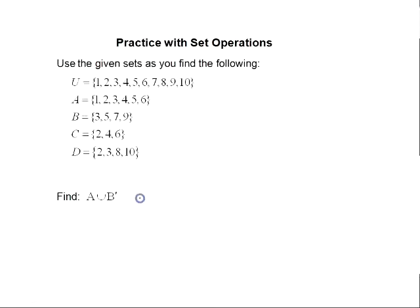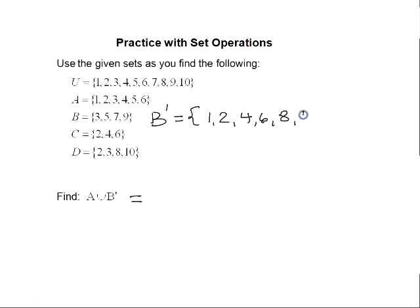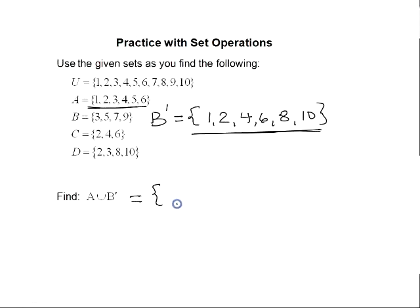Let's do a little practice with set operations. The first problem is A union with the complement of B. To find A union with the complement of B, first we need the complement of B — everything in the universal set that's not in set B: 1, 2, 4, 6, 8, and 10. Then we take the union of A with the complement of B, joining these two sets together: {1, 2, 3, 4, 5, 6, 8, 10}.